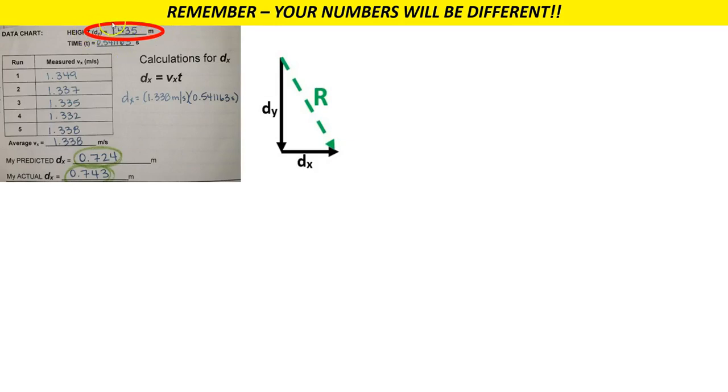So first off, you measured your dy, the height. So you can just plug that into your diagram. And you also measured your actual dx. Please use your actual and not your predicted. So you've got the other leg. Plug that into your diagram. You're halfway there.